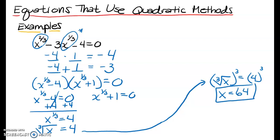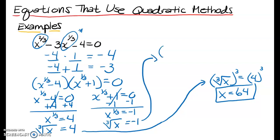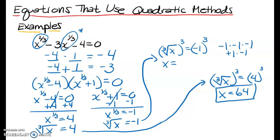For the other factor, we subtract 1 from both sides to get x to the one-third equals negative 1. I'll rewrite this as a cube root and cube both sides to eliminate it. Cubing negative 1 means multiplying it three times: positive 1 times negative 1 is still negative 1. So x equals negative 1, giving us two answers for this equation.